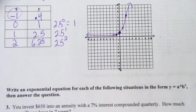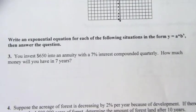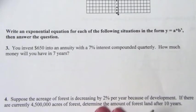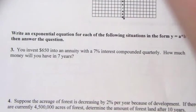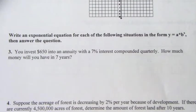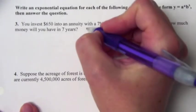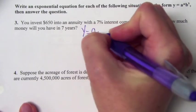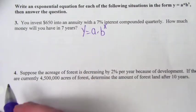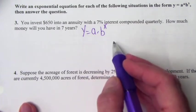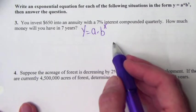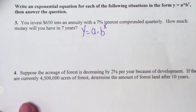Numbers 3 and 4 — I know a lot of people have forgotten exactly how to do those. Number 3 is an exponential growth problem because it's money put into an annuity with 7% interest — that would grow, not decay. In both problems we use the same function: y equals a times b to the x power, where a is your starting amount and b is your growth rate. Our starting amount, a, is $650.